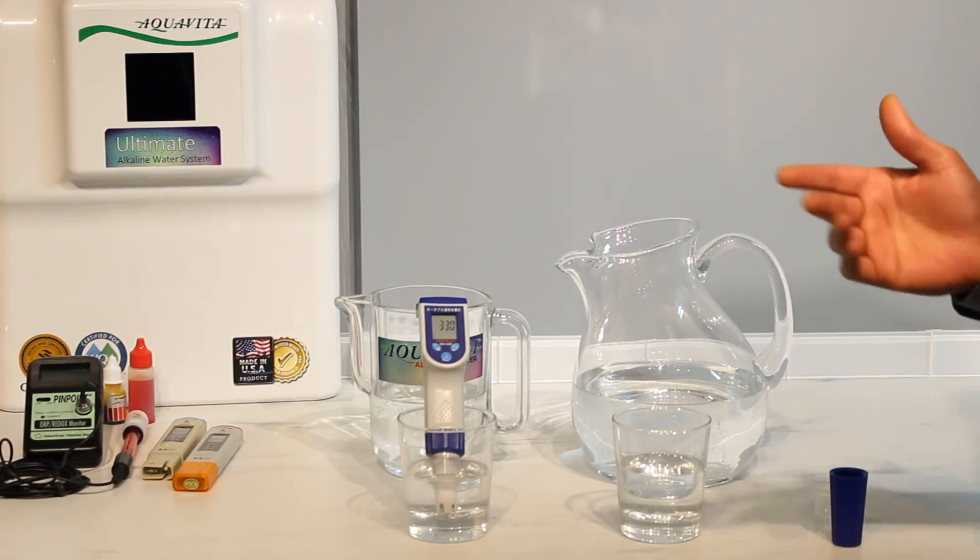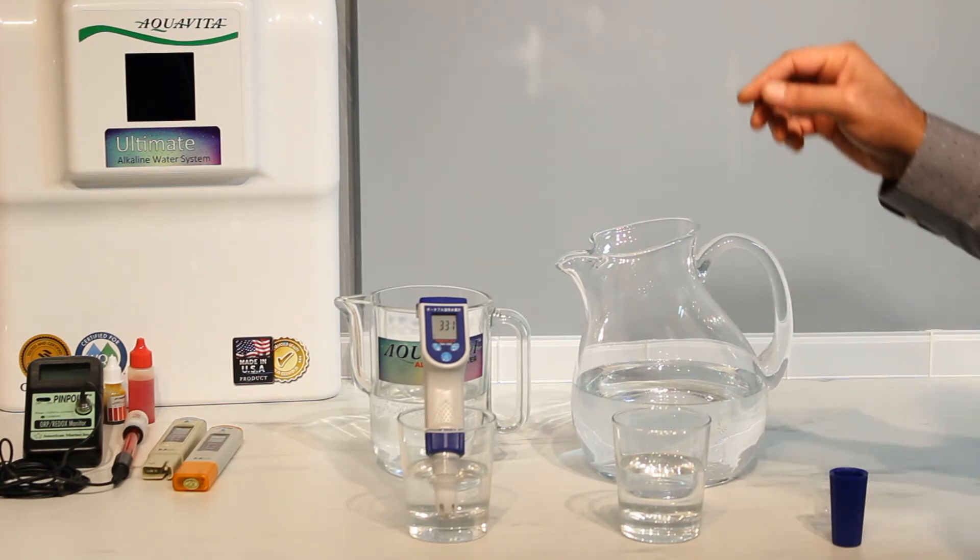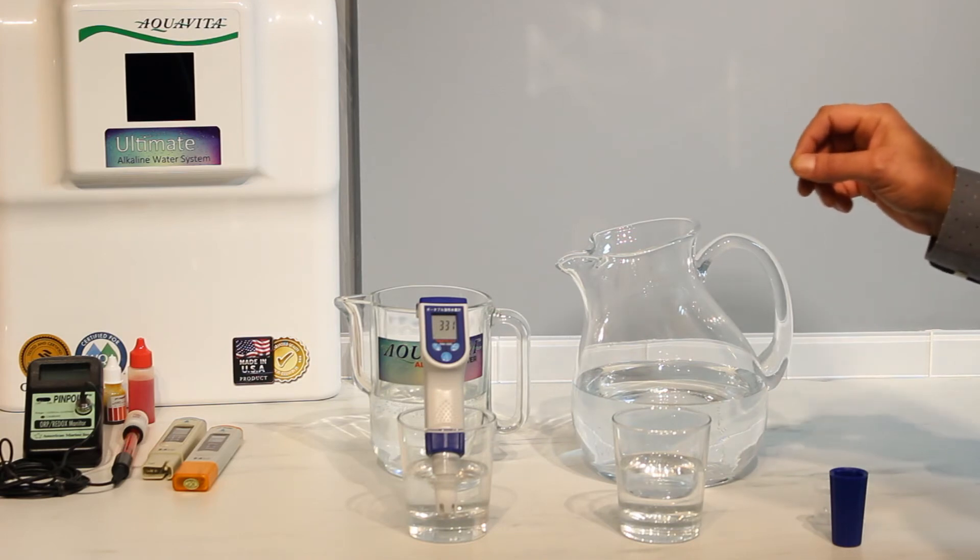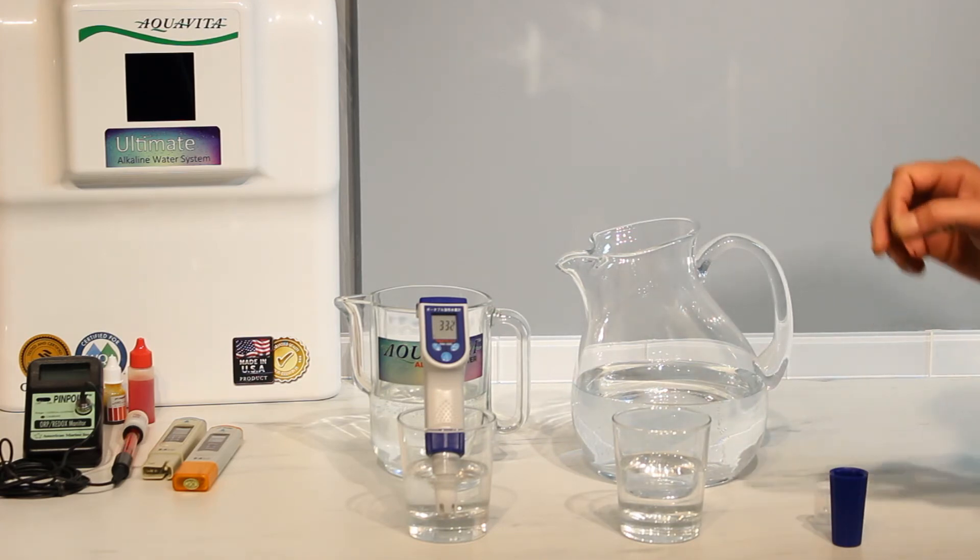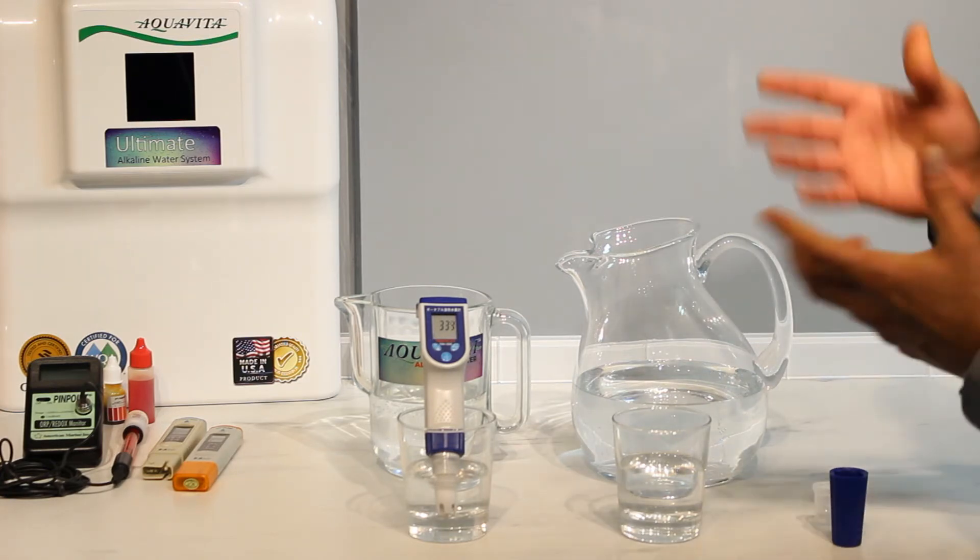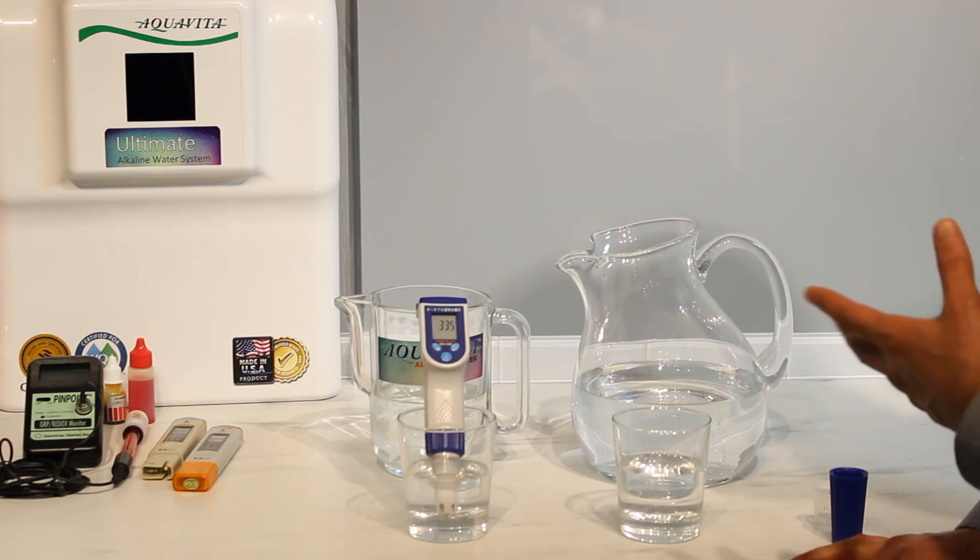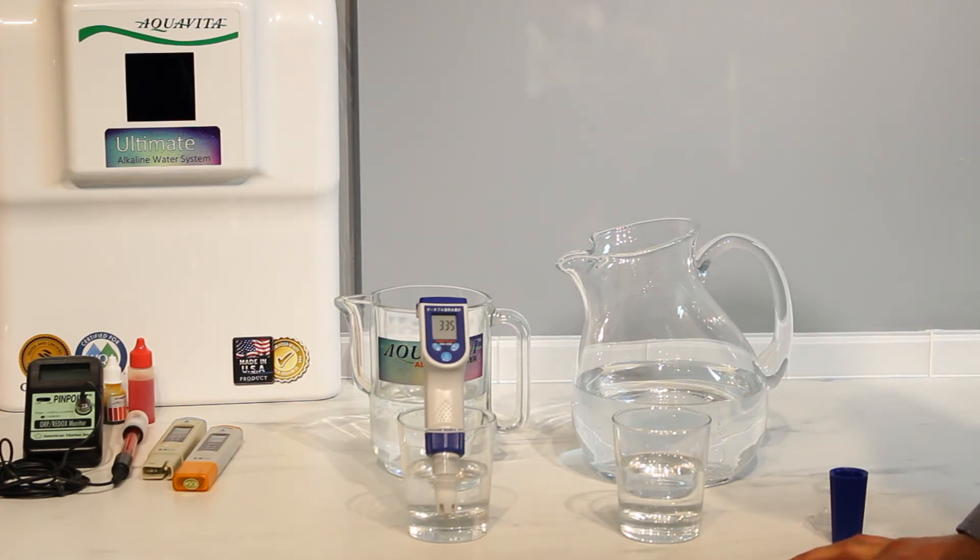And this water, as you've seen already, is alkaline water which has antioxidant properties. It is micro-clustered water, and now you can see this is hydrogen-rich water, which are all combined to give the water the maximum health benefits. This number can even go up to about 500, 600, 700 ppb.